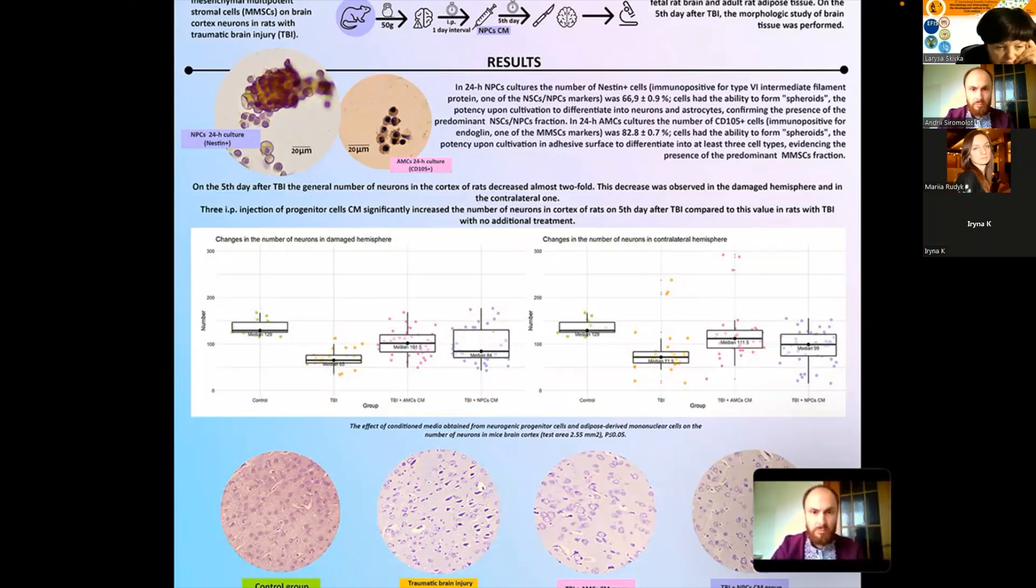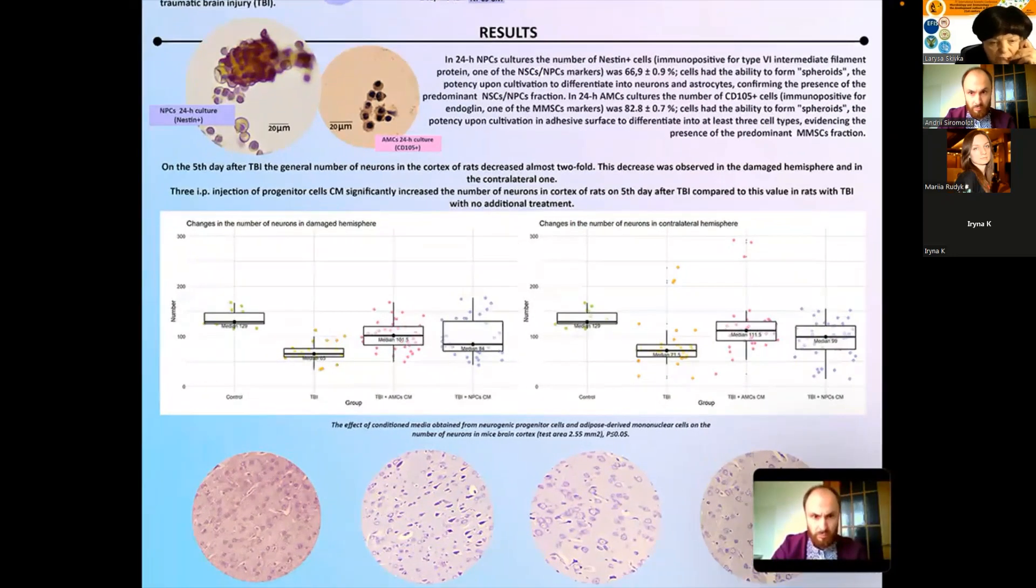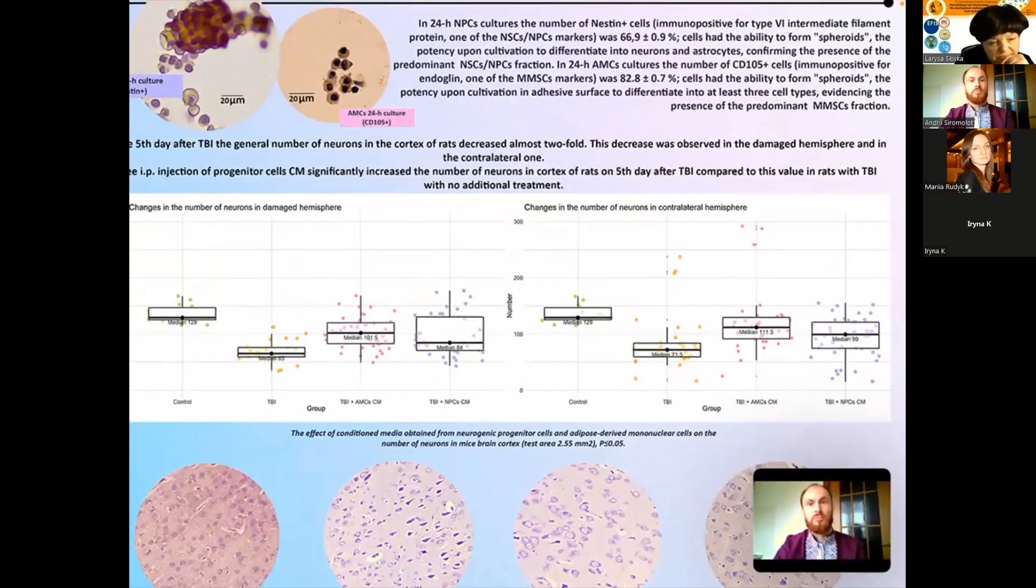The intraperitoneal injection of progenitor cells conditioned media significantly increased the number of neurons in the cortex of rats on the fifth day after traumatic brain injury compared to this value in rats with traumatic brain injury with no additional treatments. And the medians were correspondingly 84 and 99 in damaged and contralateral hemispheres after the conditioned medium injections. And 102 and 112 correspondingly after the adipose-derived conditioned media.